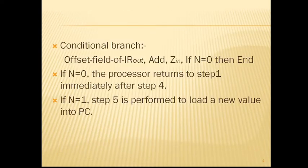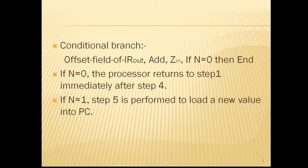Let us take a conditional branch example. In the case of a conditional branch, we need to check the status of the condition codes before loading a new value into the PC. There are two types: unconditional branch, where no condition is specified for the branch, and conditional branch, where we specify some condition and must check the condition codes before loading a new value into the PC.